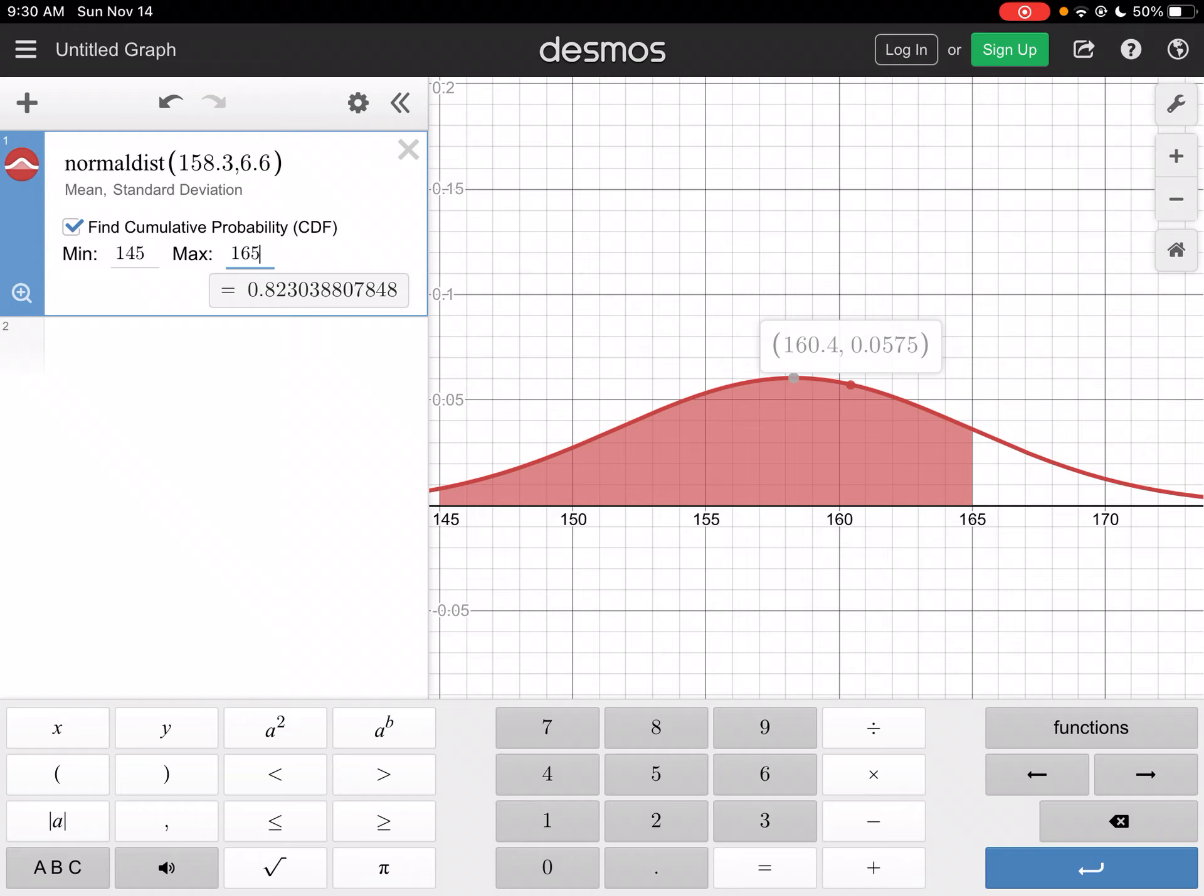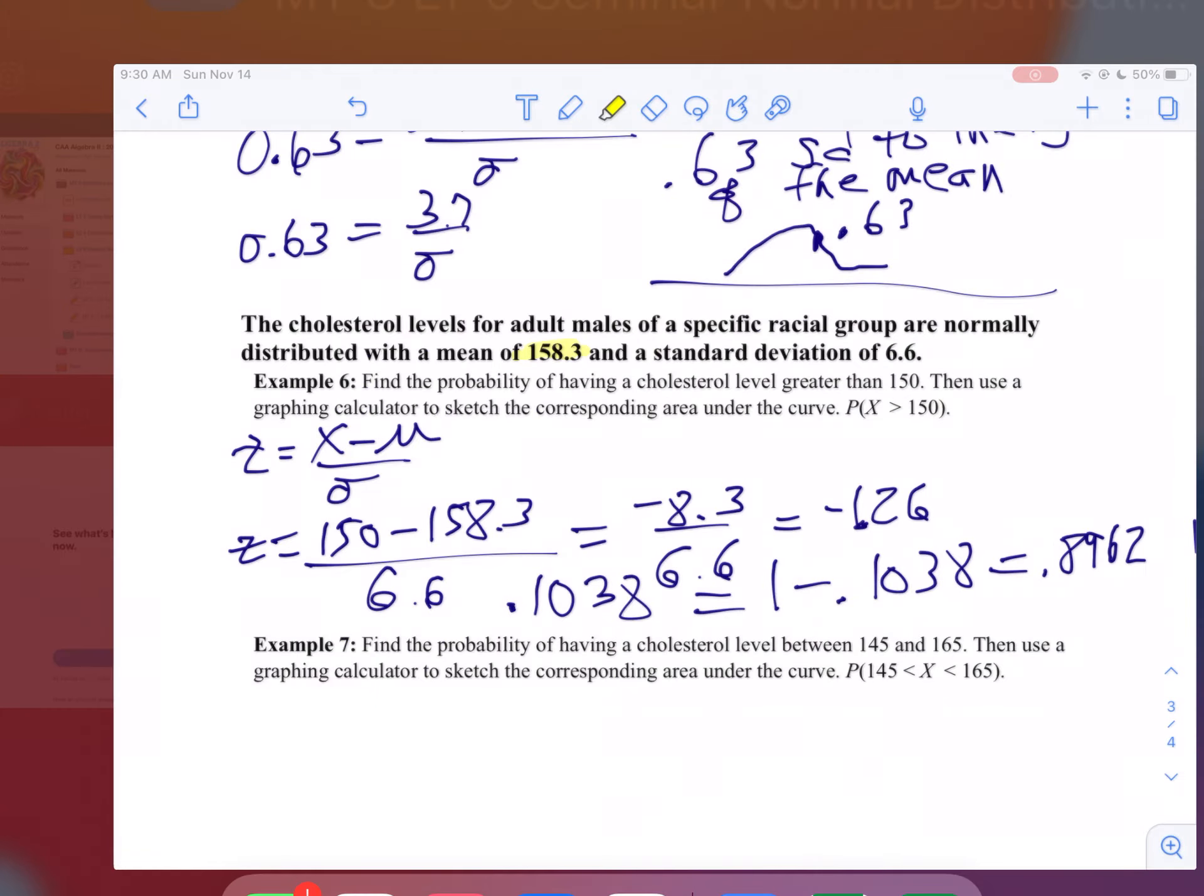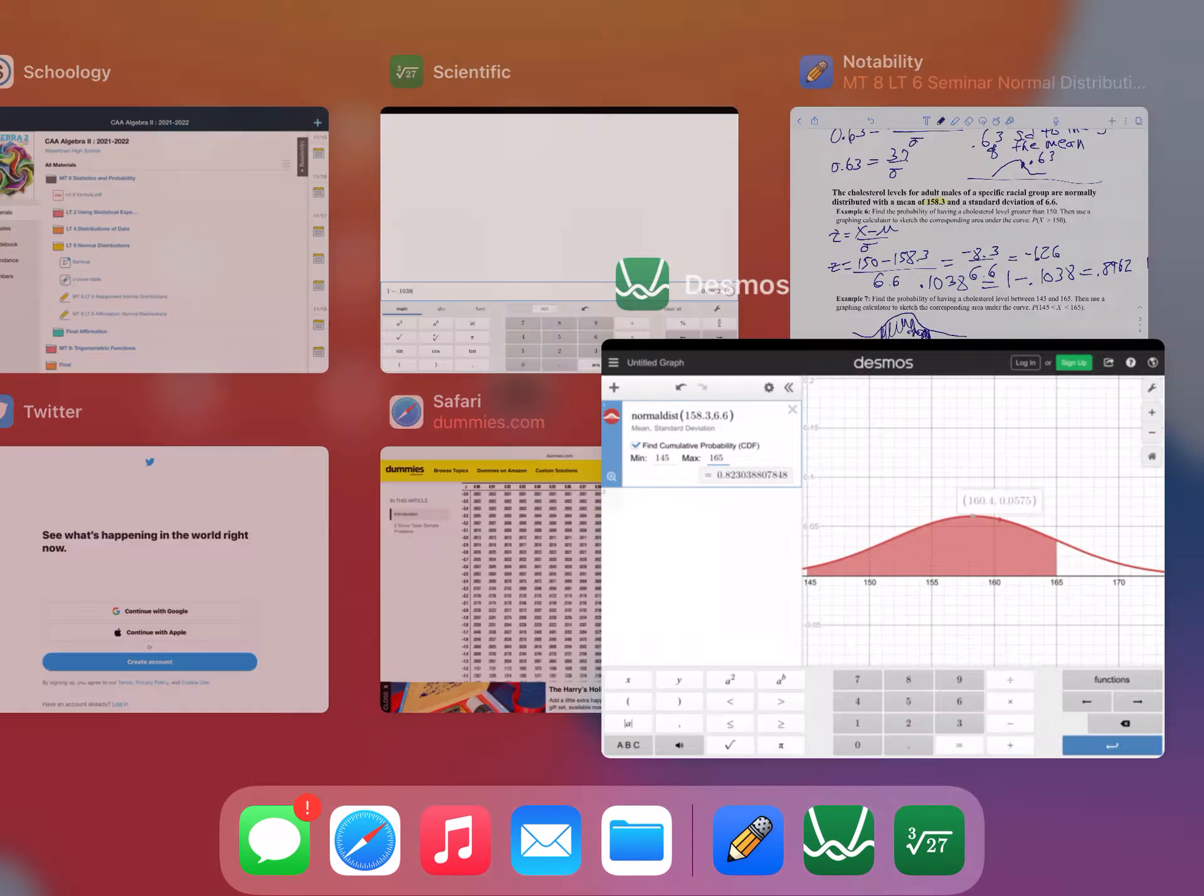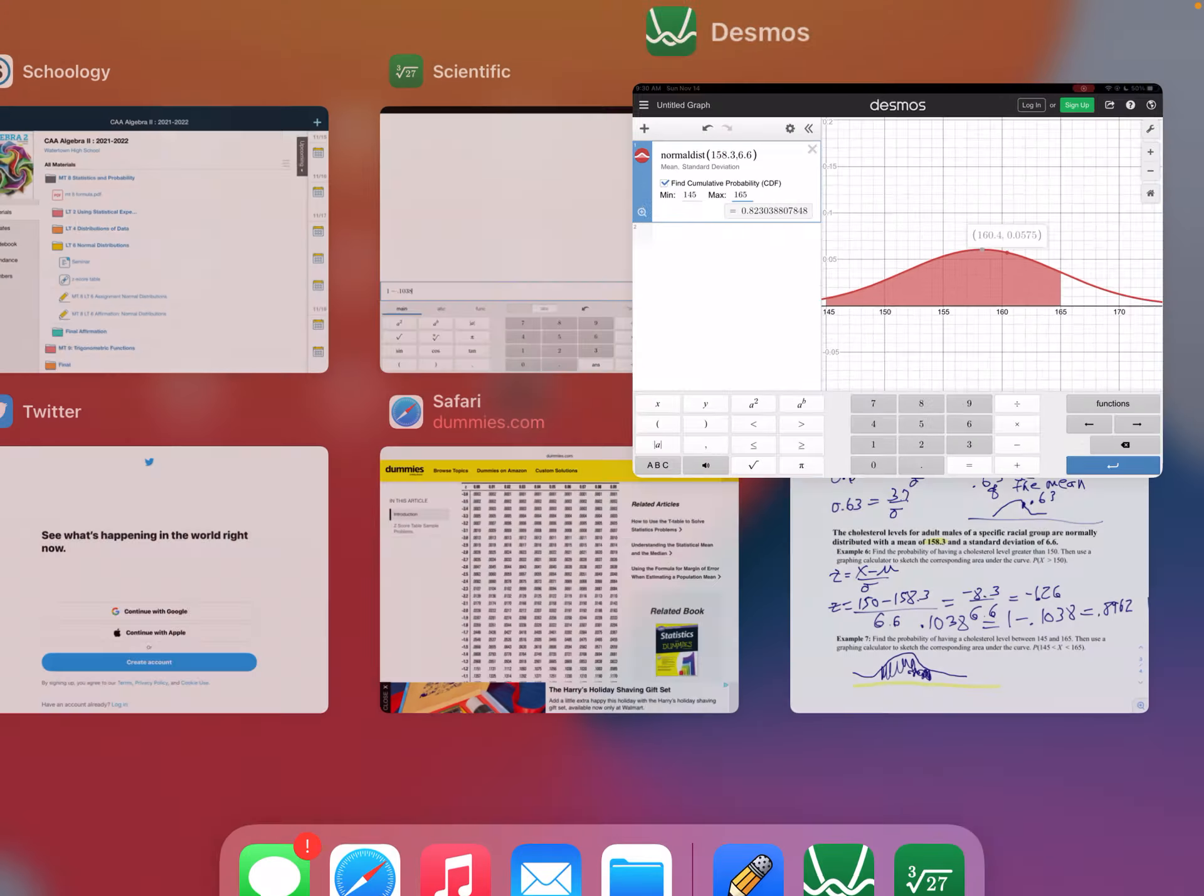So I've got my area under the curve is 0.823. So let's sketch this out. So here's my normal distribution. And so my area under the curve is going to be right there, which is 0.823.